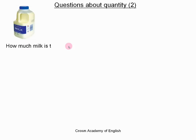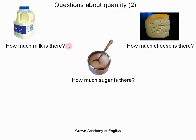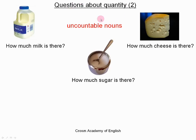Let's look at some more questions about quantity. How much milk is there? How much cheese is there? And how much sugar is there? This time, all of these nouns are uncountable nouns. We cannot count uncountable nouns — they are not separate objects, and they are always in the singular: milk, cheese, sugar. So when we are using questions about quantity with uncountable nouns, then we use the expression 'how much'.